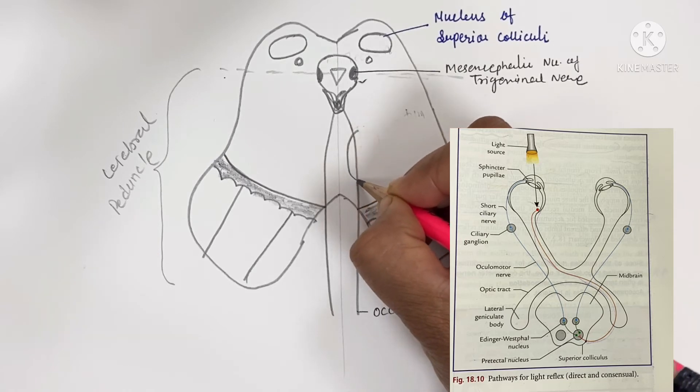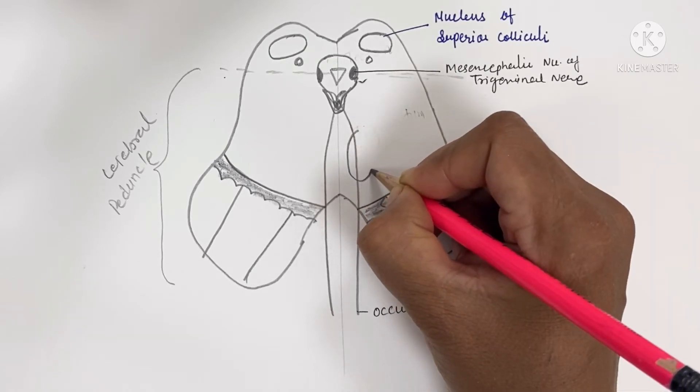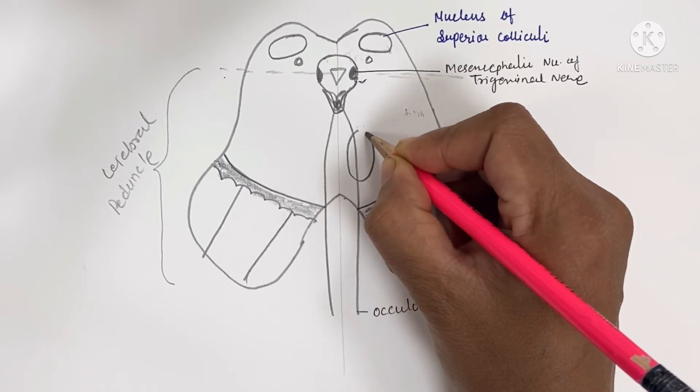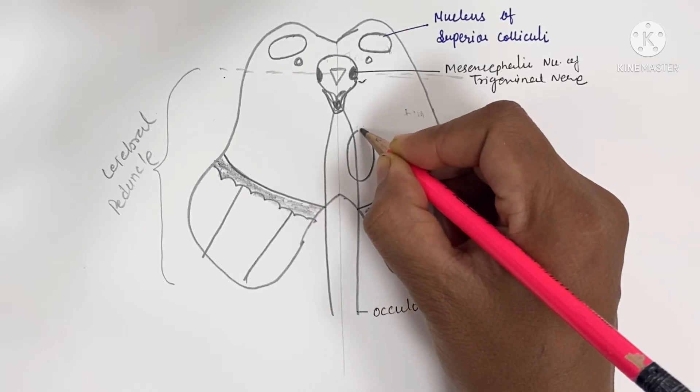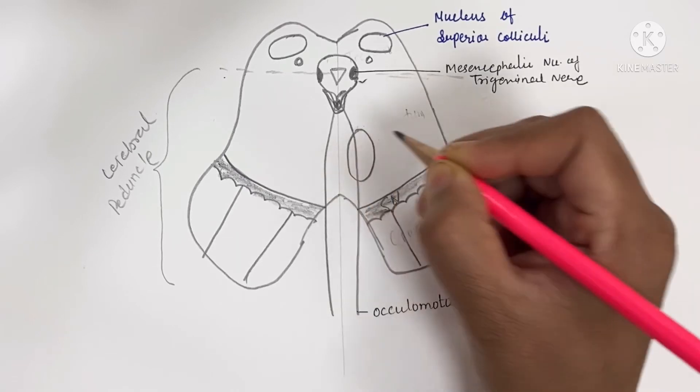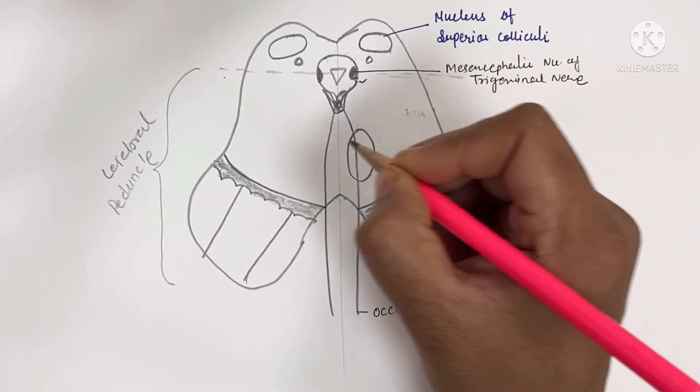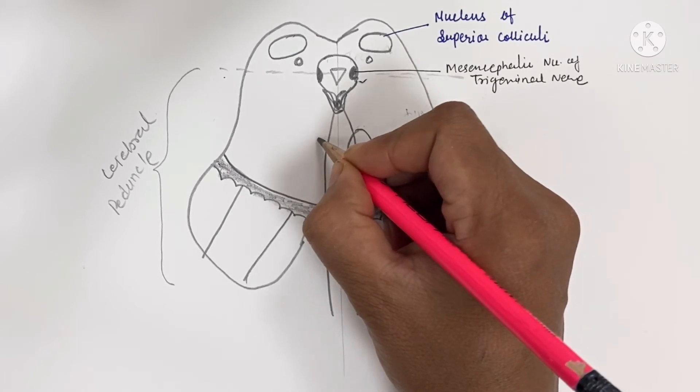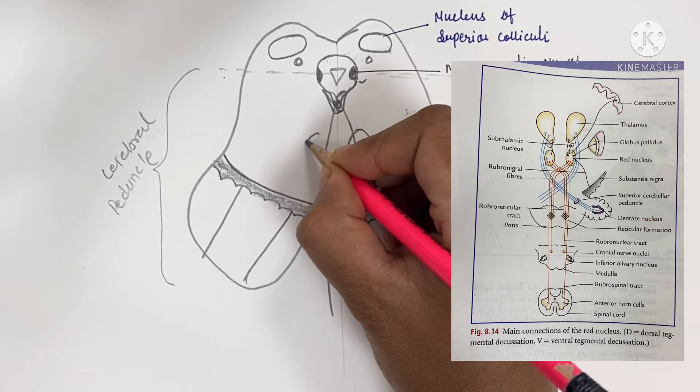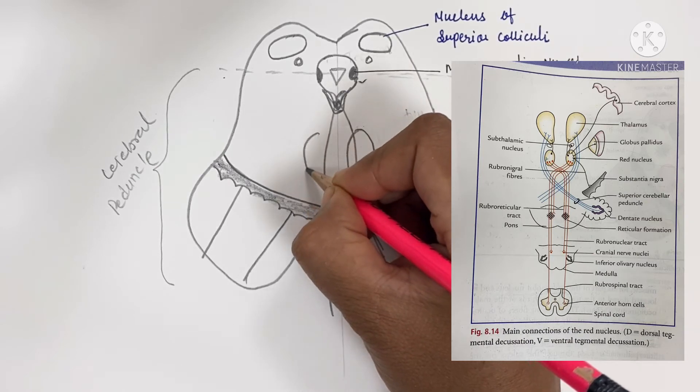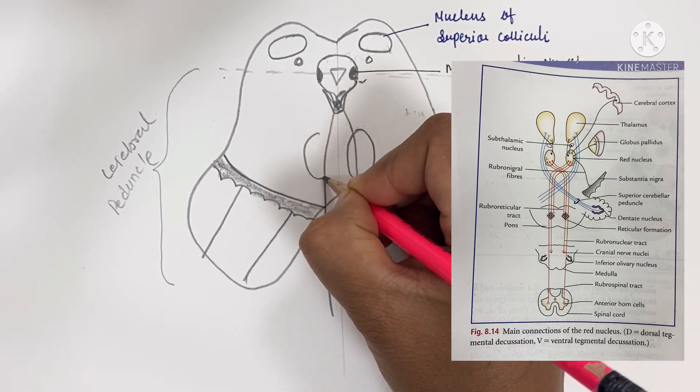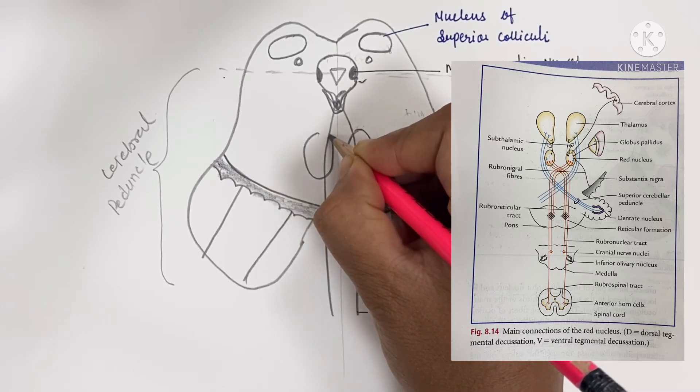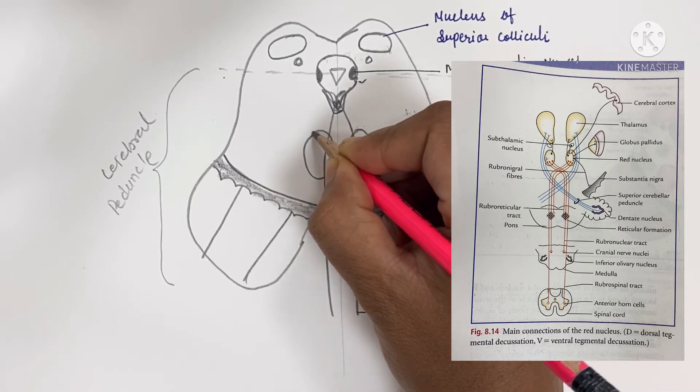Red nucleus is an ovoid gray matter, 0.5 centimeters in diameter. In fresh specimens it is red in color due to high vascular supply and iron-containing pigment present in the cytoplasm of its cells.